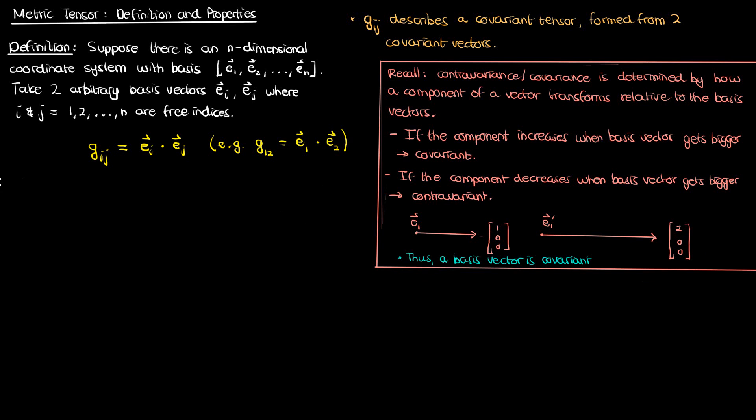That was a long explanation for something that might be obvious to many of you, but hopefully that made sense. Going back, I've written the metric tensor as the dot product of two basis vectors, and let's use this definition to actually compute the metric tensor in Cartesian coordinates. I'll denote this with a line in front of g sub ij and writing 'cart' for Cartesian.